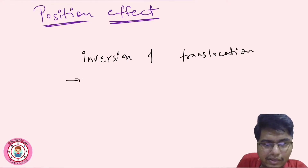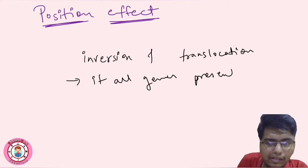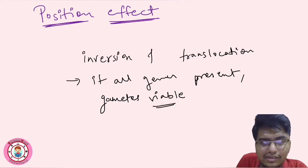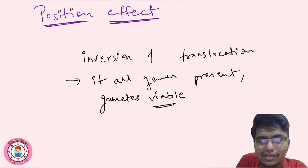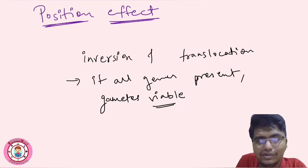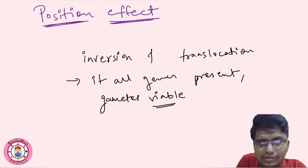After meiosis, some gametes are viable. We know which gametes are viable — those that have all the genes present. So if all genes are present, then the gametes are viable. But if genes are deleted or duplicated, then the gametes are not viable.